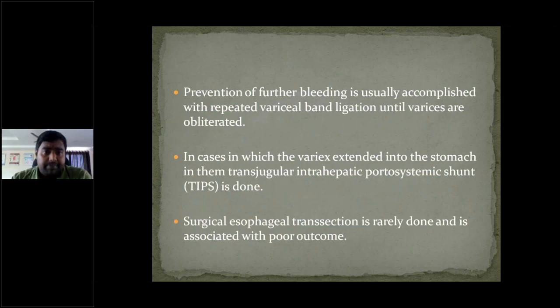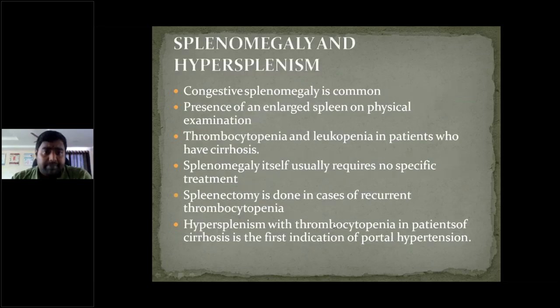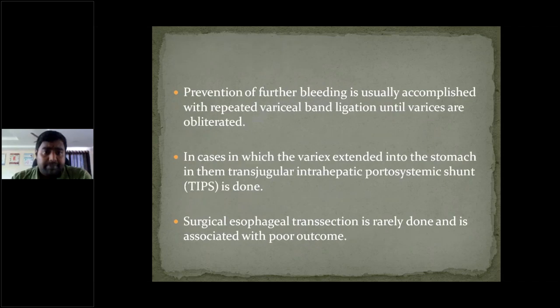Sclerotherapy and endoscopic band ligation are usually done. Further bleeding is managed with repeat band ligation until the varices are obliterated. When the varix is very large and extends into the stomach, transjugular intrahepatic portosystemic shunts (TIPS) are placed. Surgical esophageal transection is rarely done and is associated with poor outcomes.